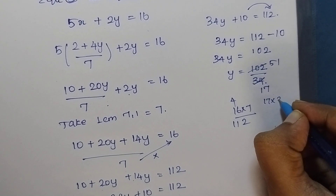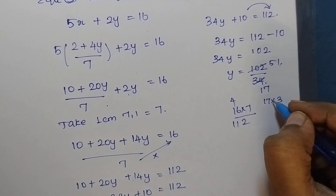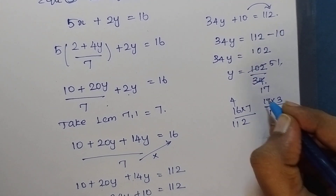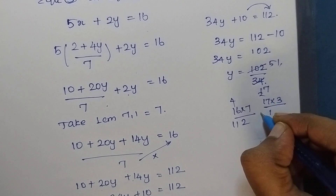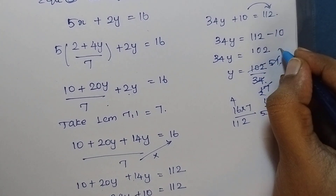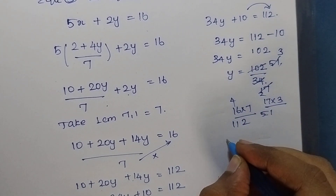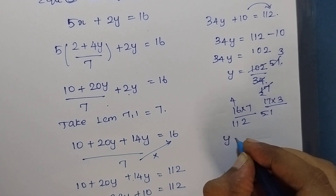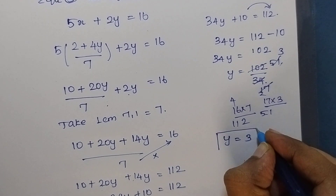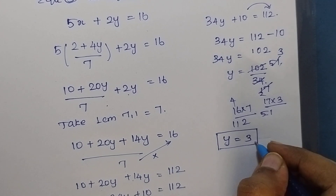Let's check: 17 into 3 is 51, so 102 divided by 34 — both divide by 2 to give 51 over 17, and 17 times 3 is 51. Therefore y is equal to 3. Now I have found y is equal to 3.